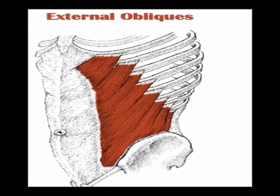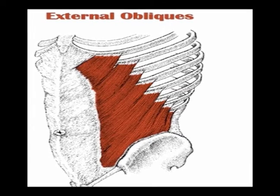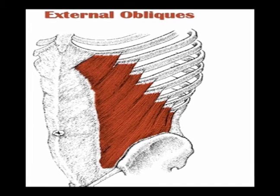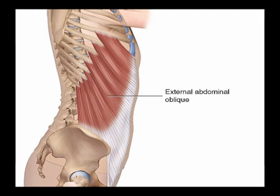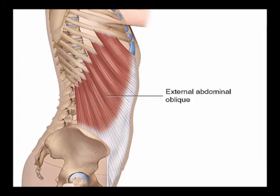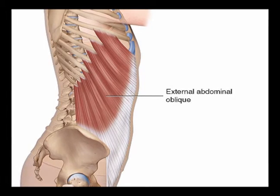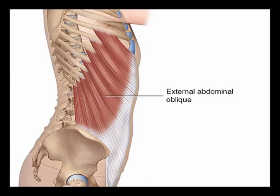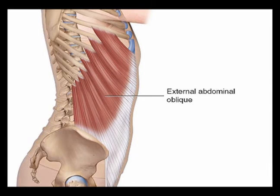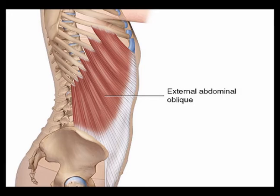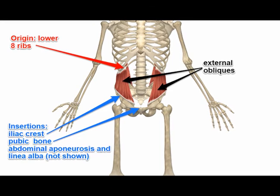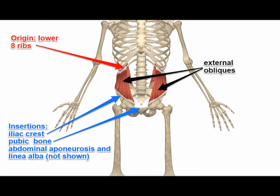The external obliques insert into the flat broad aponeurosis, which terminates at the linea alba, and also insert into the anterior iliac spine, the pubic tubercle, and the external lip of the anterior half of the iliac crest. These muscles are innervated by the ventral primary rami of T7 through T12 nerves.